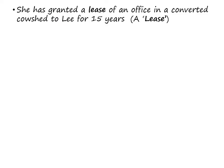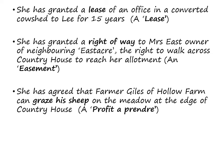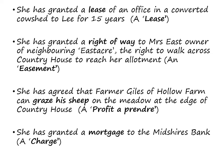The first thing she does is that she grants a lease of an office to Lee for 15 years. Then she grants a right of way to Mrs. East of a neighbouring property — the right to walk across Country House for Mrs. East to reach her allotment, and this type of interest is known as an easement. She also agrees that Farmer Giles of a nearby farm can graze his sheep on the meadow at the edge of Country House, and this is called a profit-à-prendre, or simply a profit. And then finally, she has granted a mortgage to the Midshires Bank, which we call a charge.